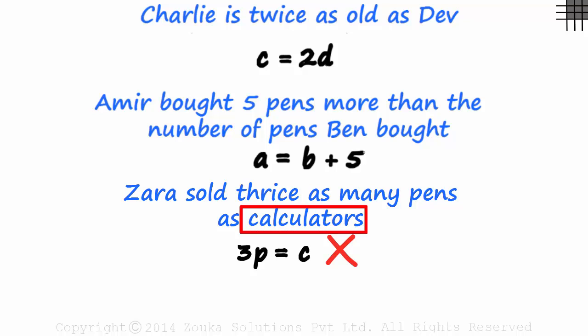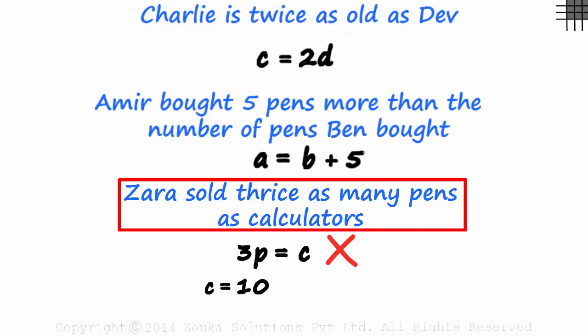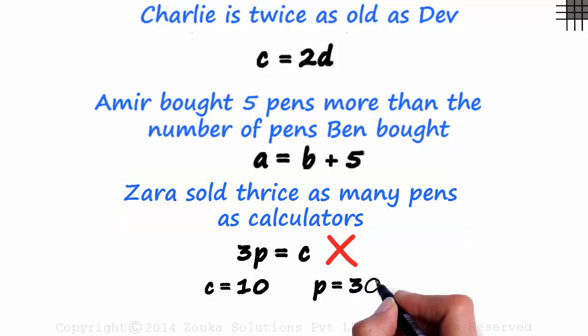Let's take an example. Say the number of calculators she sold is 10. So C will be 10 units. She sold thrice as many pens as the number of calculators she sold. So P will be 30. Does 3 times 30 equal 10? No, so P is equal to 3C is the correct way to write it.